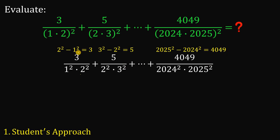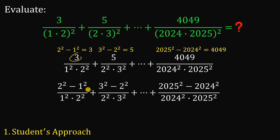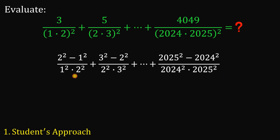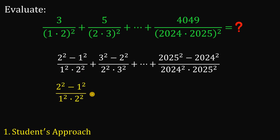So now the numerators 3, 5, 7, and so on until 4,049 — we need to replace these with their equivalent values. Let's focus on this result and then on the first term, because we will use the concept of similar fractions to handle this.